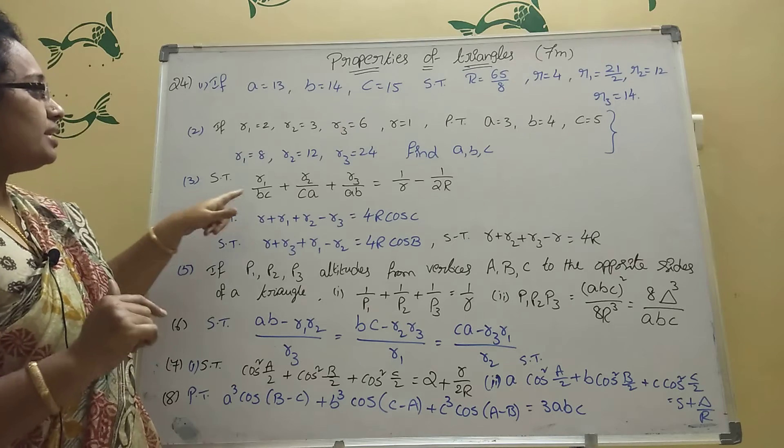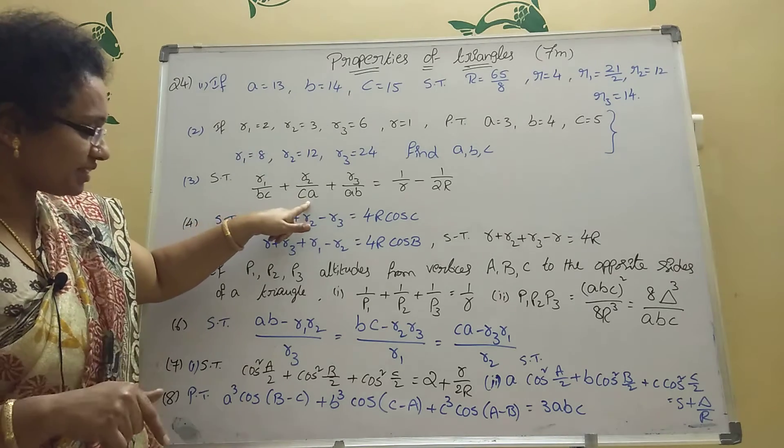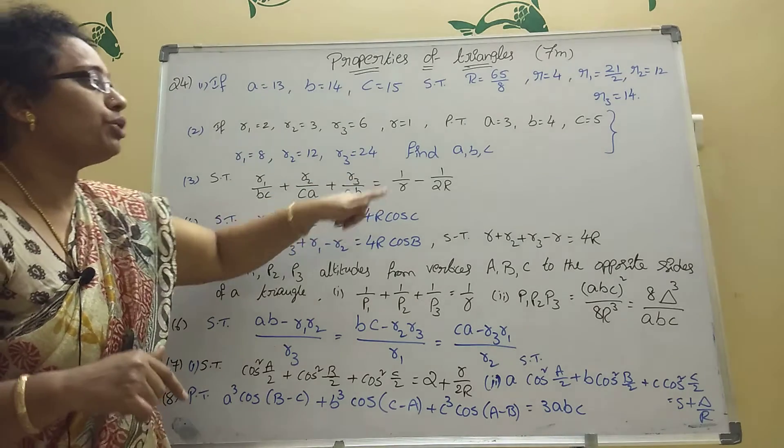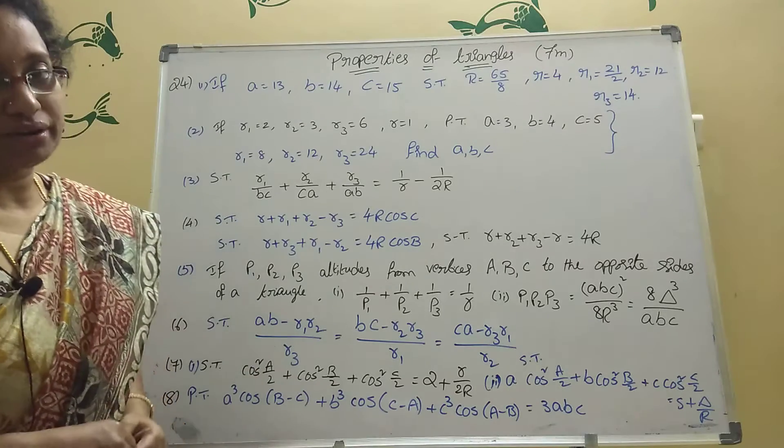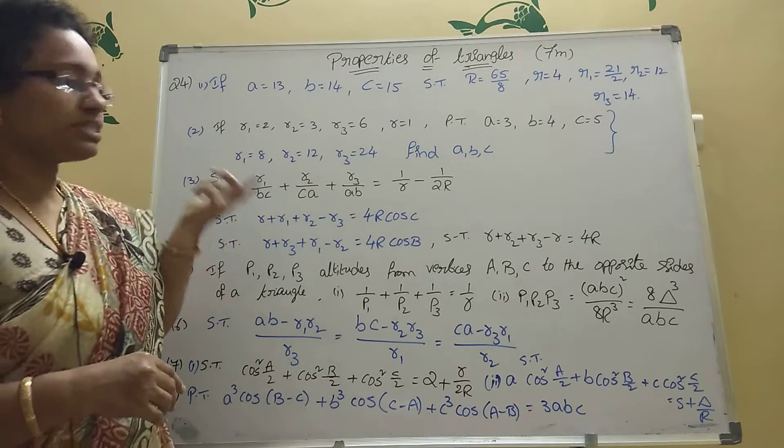Now third one is R1 by BC plus R2 by CA plus R3 by AB equal to 1 by R minus 1 by 2R. Then you should prove that this. This one also important.